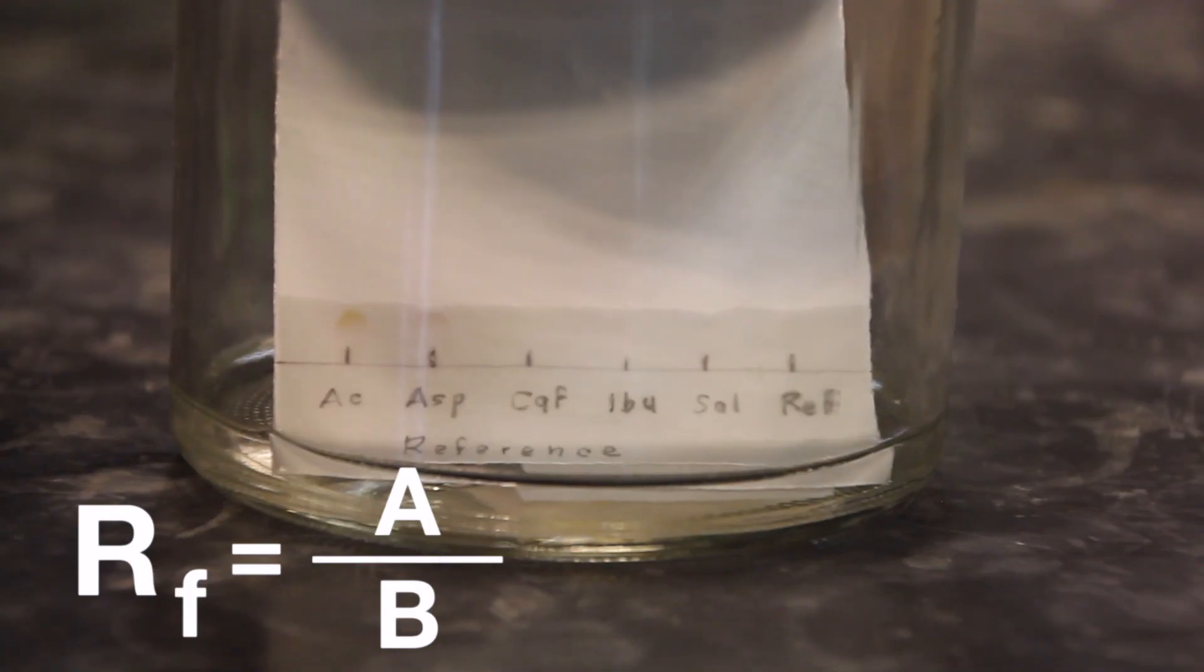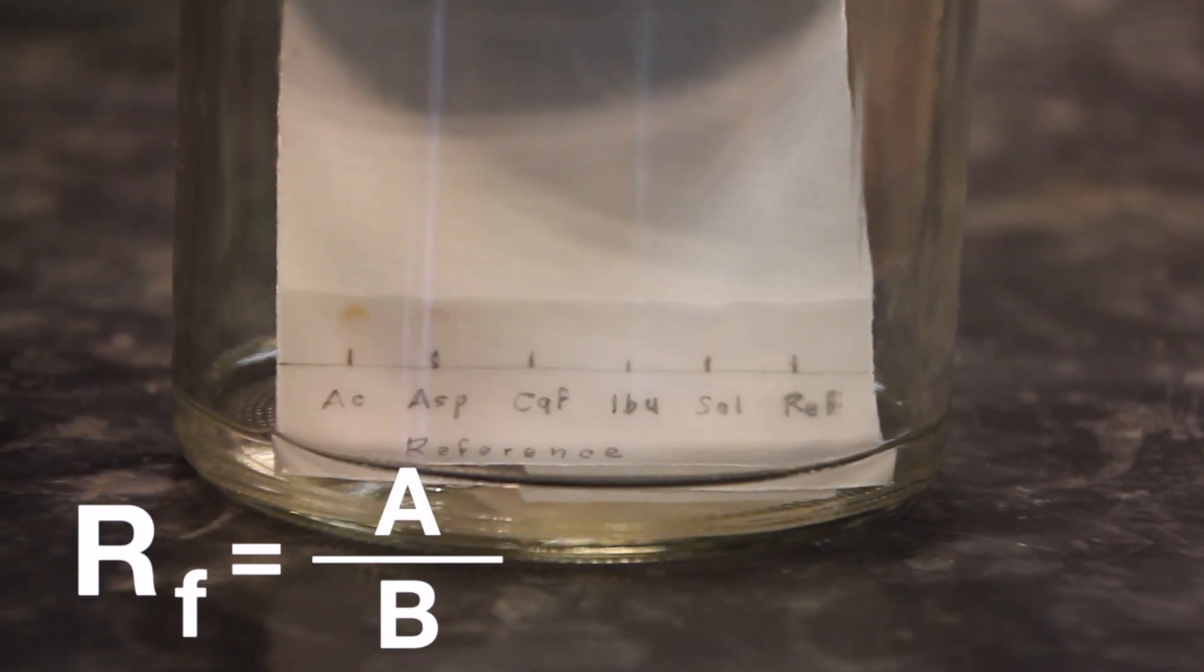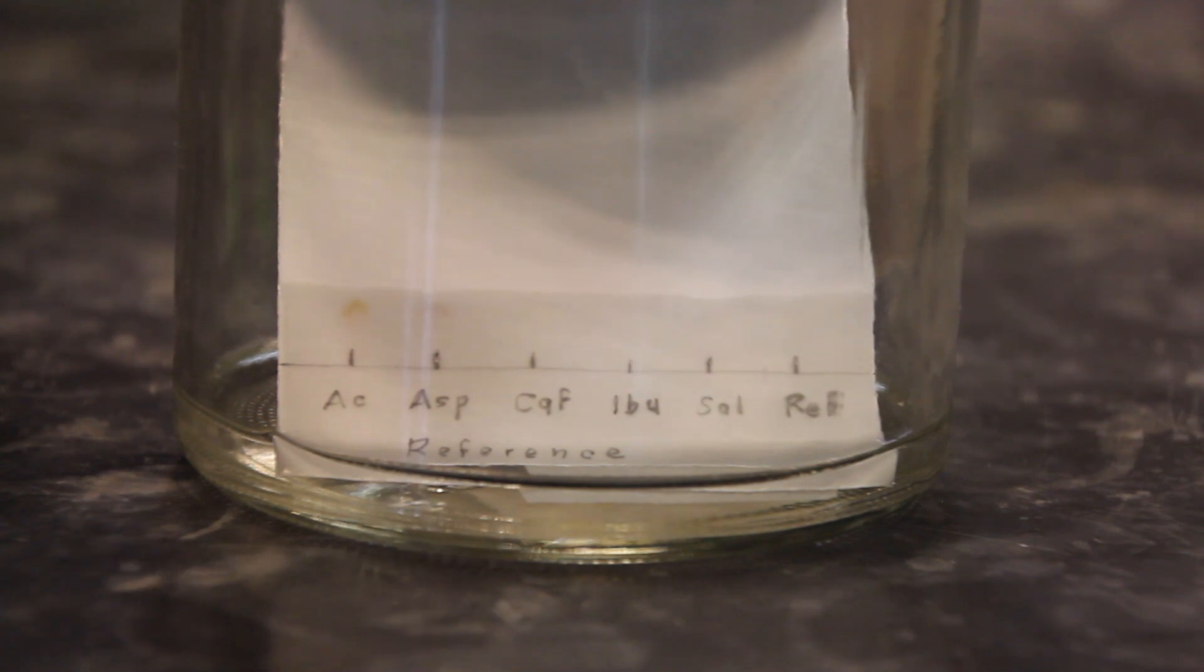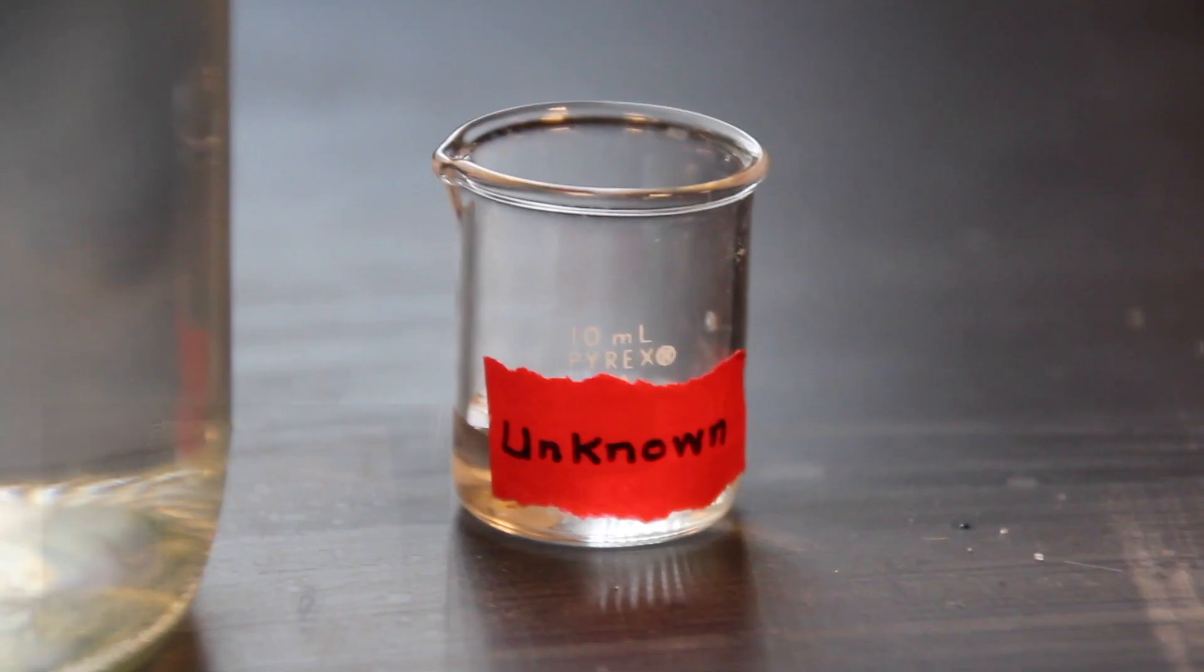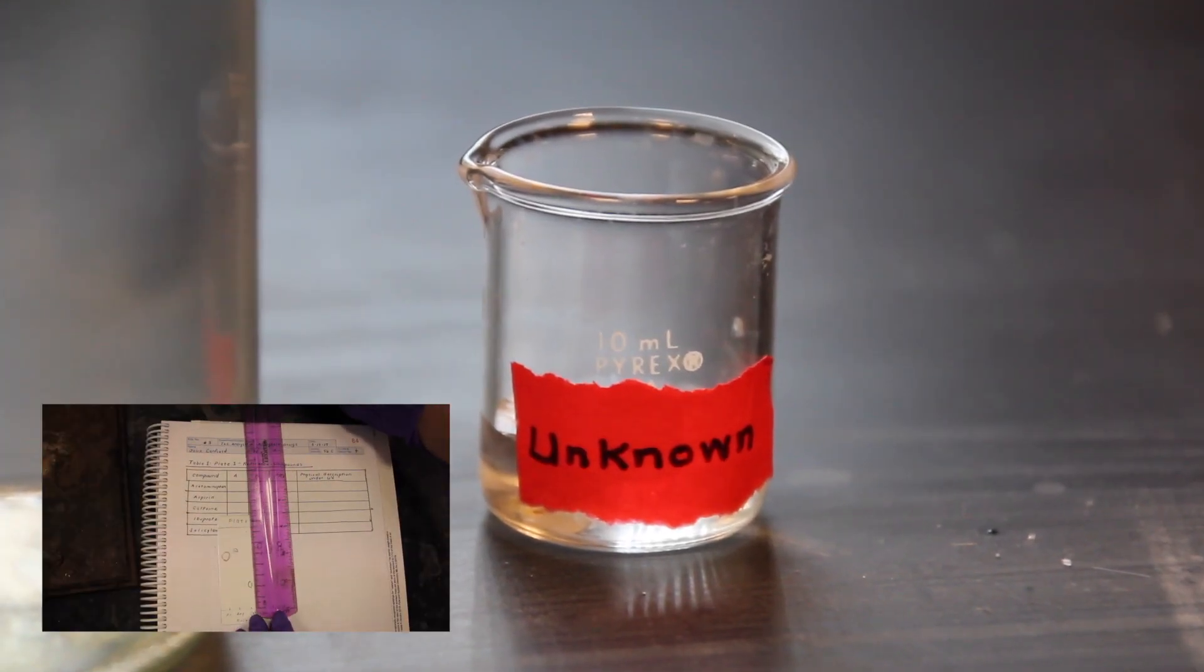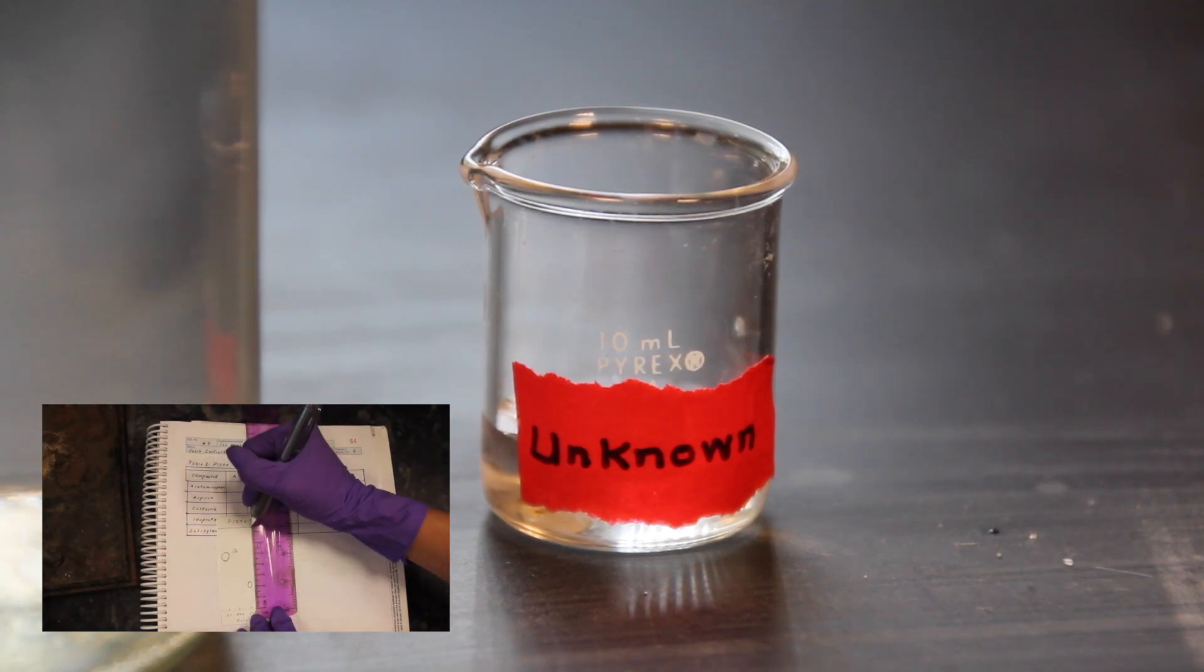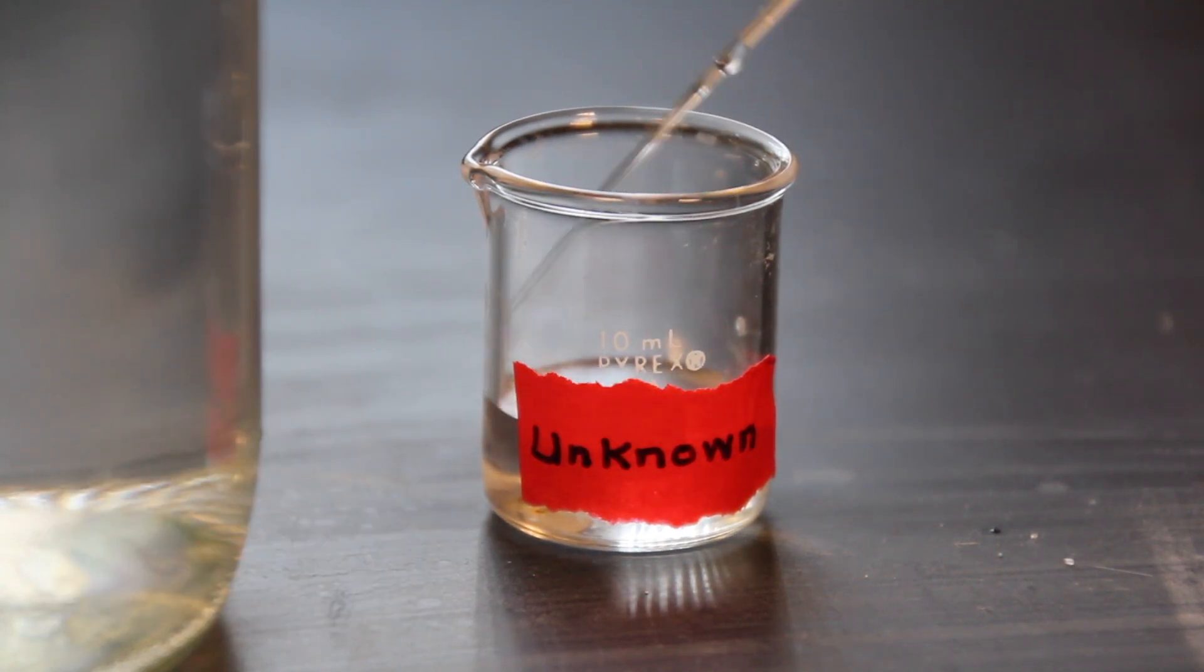You will first need to chromatograph each of these compounds separately to determine their RF values under the chosen chromatographic conditions, and then analyze an unknown analgesic tablet and report its contents via correlation to the known RF values of possible constituents.